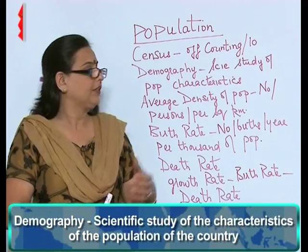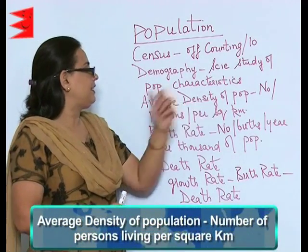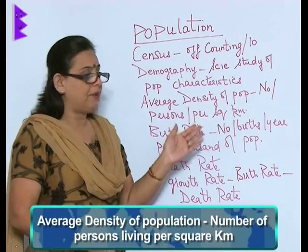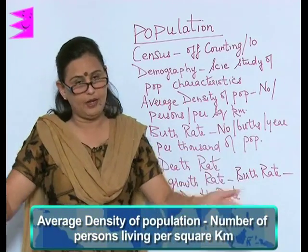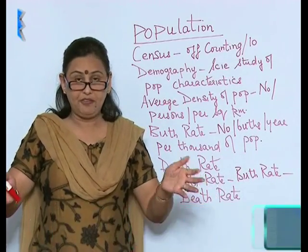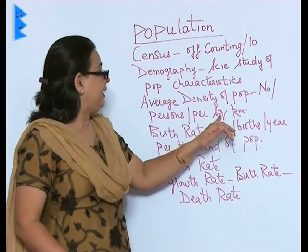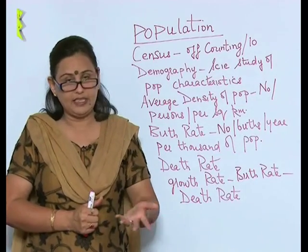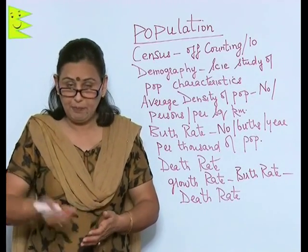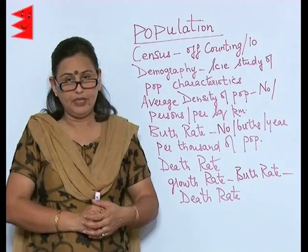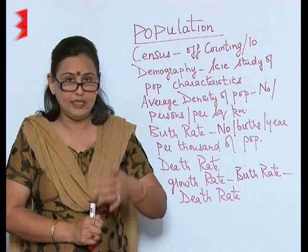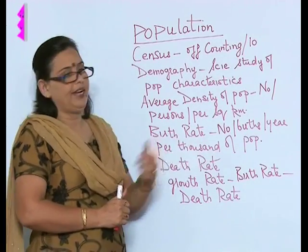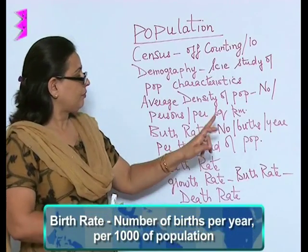Average density of population — it is the number of persons living per square kilometer. If there are more people living per square kilometer, then we say that it is densely populated. If the people are less in that area, then it is considered a sparsely populated area.